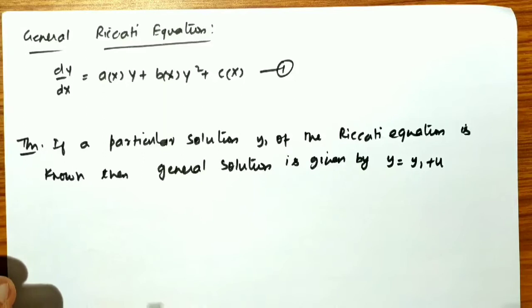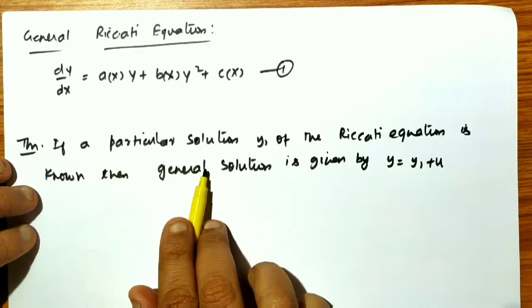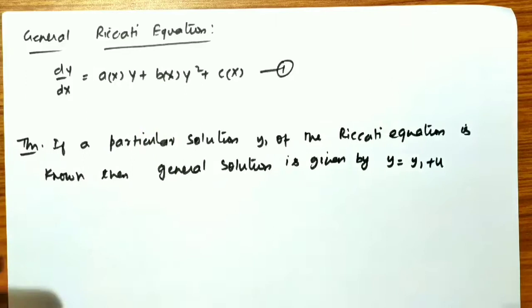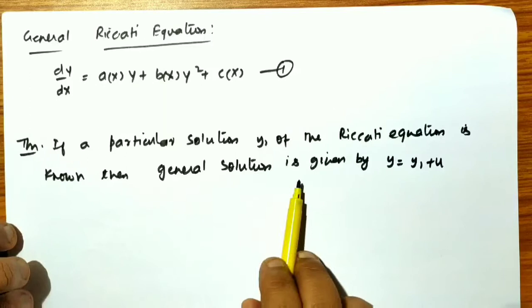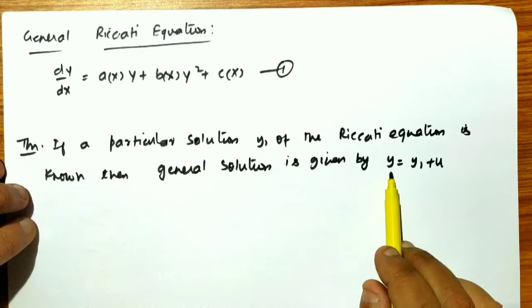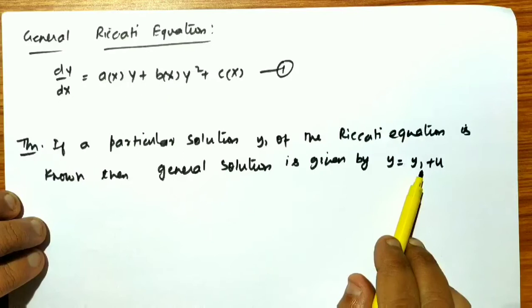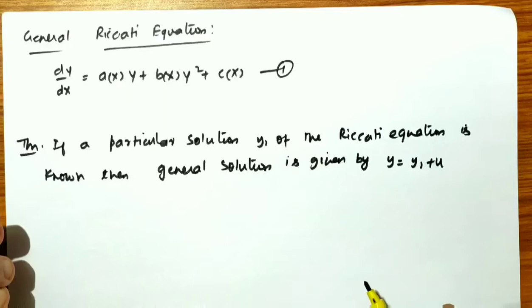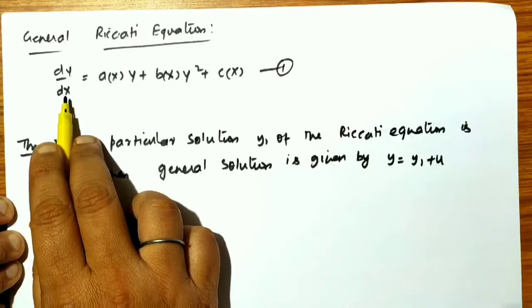So, if a particular solution y₁ of the Riccati equation is known, then by using this theorem we will find the solution of the Riccati equation. The general solution is given by y = y₁ + u. If I substitute y = y₁ + u — because y₁ is a solution of this differential equation — then this equation will be reduced. Let's see what happens when I substitute y = y₁ + u in place of y.